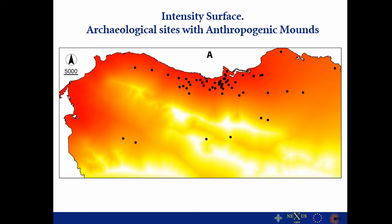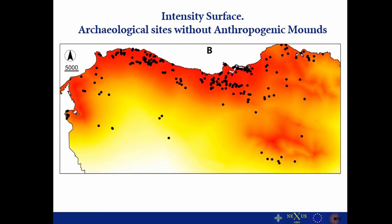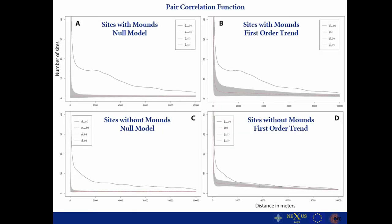As you can see here, this is the intensity surface we did for sites with anthropogenic mounds. Interestingly, the main environmental variables that got a significant correlation with the distribution of sites with anthropogenic mounds were actually variables related to mountainous and inter-mountainous features. In contrast, when we calculated the same point process model for sites without anthropogenic mounds, we got significant correlations between environmental variables related to agriculture — good soils for agriculture — and these sites without mounds, which is quite interesting. Although this doesn't mean the mounds were not used for agriculture, it means there is something we need to review within this type of data.